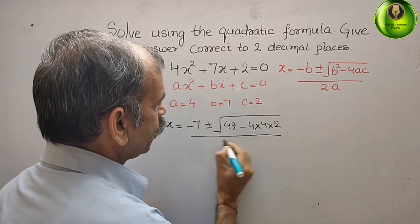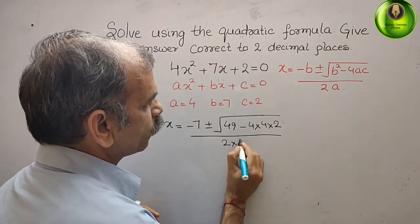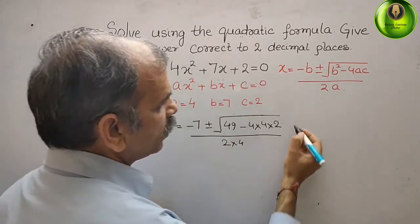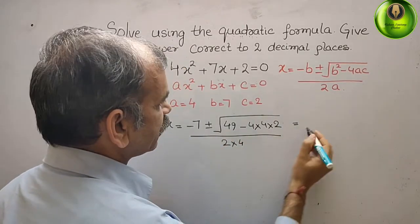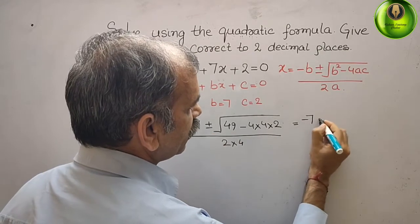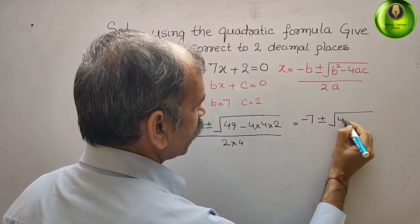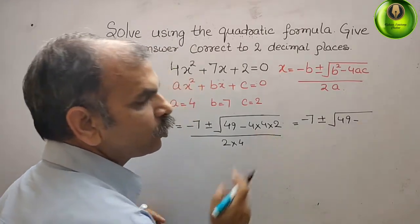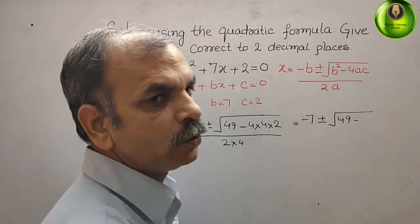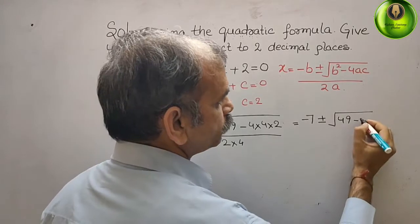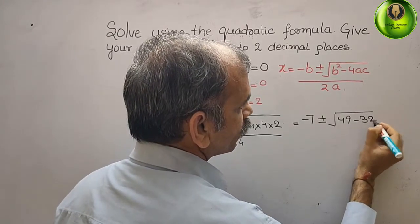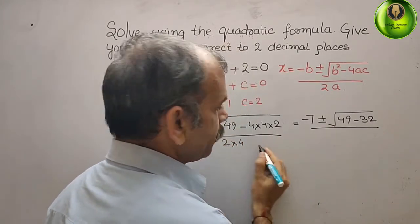by 2a, 2 into 4, which gives us what? This is equal to, we can say it's -7 ± √(49 - 32 is 17) / 8.